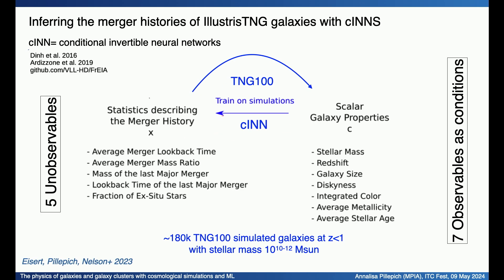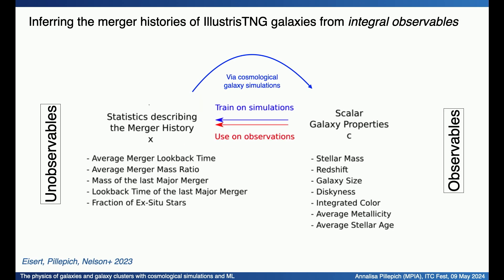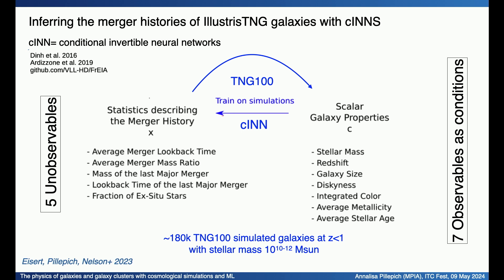With this knowledge, we selected a series of simple summary statistics that could be obtained with shallow photometric surveys: galaxy stellar mass, ratio of galaxy sizes, some morphological estimation, color, average stellar metallicity, and average stellar ages. We wanted to recover the mass of the last major merger, the time of the last major merger, and the fraction of ex-situ stars. The answer is yes. We did this with TNG100 by training a conditional invertible neural network on 200,000 galaxies and testing on a subset — galaxies with stellar mass of the Milky Way and up to BCGs.